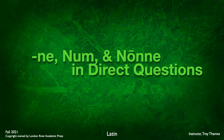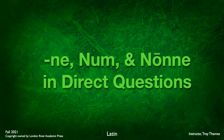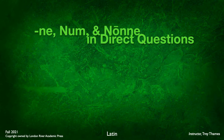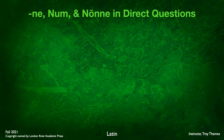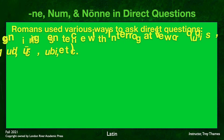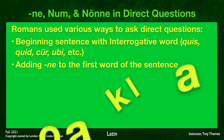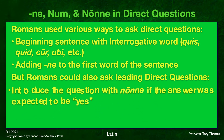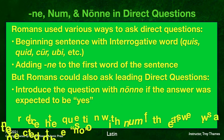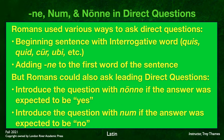Let's look first at ne, num, and nonne in direct questions. You may remember we have studied previously how Romans asked questions, and they did it in various ways. They could begin a sentence with an interrogative word like quis, quid, cur, ubi, etc. You could also add an -ne as a suffix to the first word of the sentence.